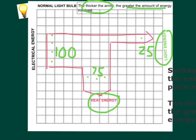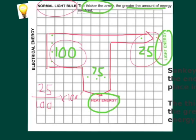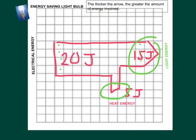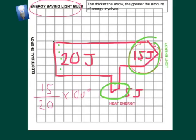Going back to the original examples — for the normal light bulb, the useful energy is 25 joules divided by the total energy of 100 joules, times 100%, which equals 25%. For the energy saving light bulb, the useful energy transfer was 15 joules divided by the total energy of 20 joules, multiplied by 100%, giving an efficiency of 75%.